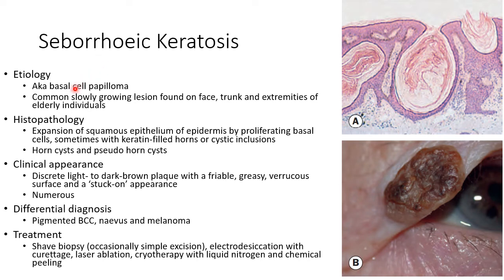Coming to seborrheic keratosis, it is also known as basal cell papilloma. It is a common slowly growing lesion found on the face, trunk and extremities of elderly individuals. Histopathology shows expansion of squamous epithelium of the epidermis by proliferating basal cells, sometimes with keratin-filled horns or cystic inclusions. As you can see in this picture, histopathology will show horn cysts and pseudo horn cysts.